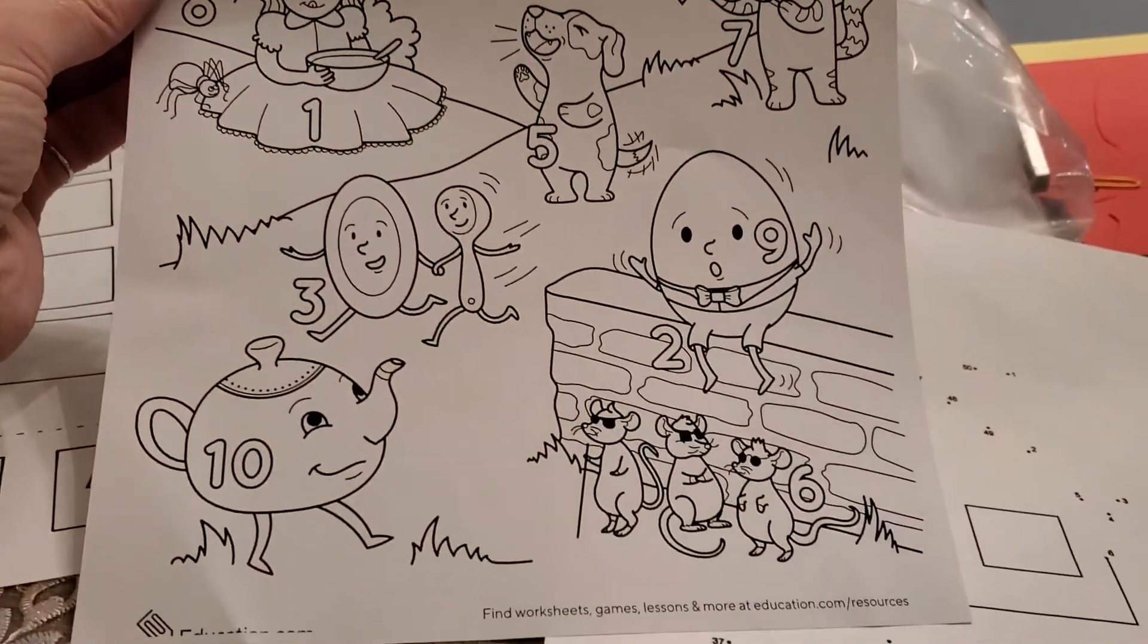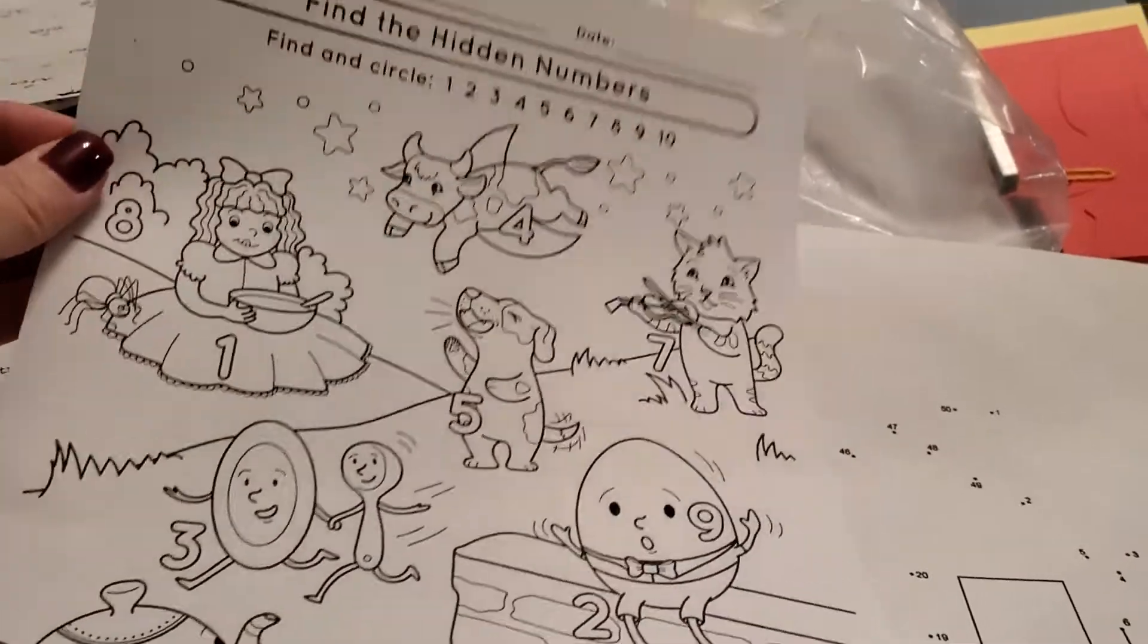So all you have to do is find the numbers, and I want you to color. And please make sure that you take a picture of your work after you color it. And make sure you circle the numbers. Find all the numbers and color it very, very pretty, please. I know you can do it. Alright, have fun doing that one.